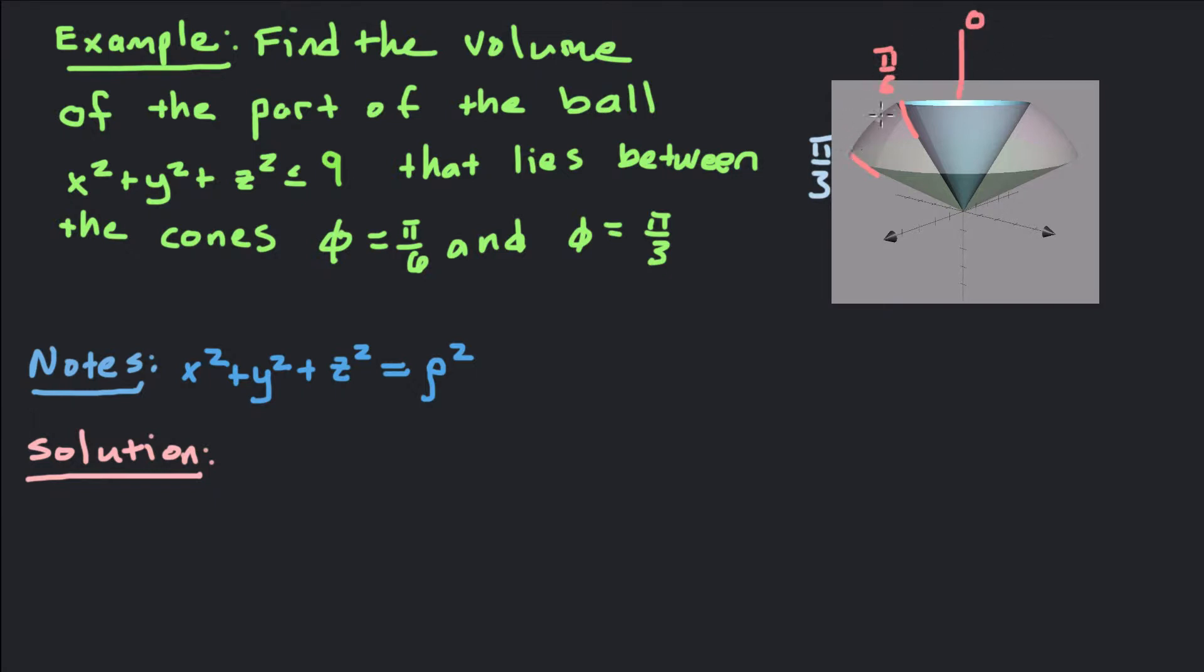So 0, π/6, π/3. We want to stay between those two cones and under the ball. That's going to be our region of integration. Everything in here is our region of integration, so that's the thing we're trying to find the volume of.